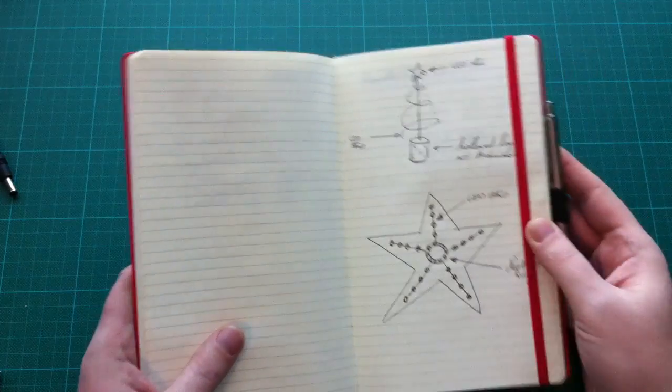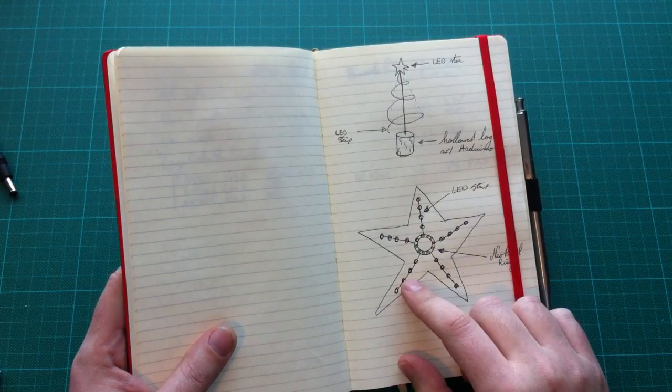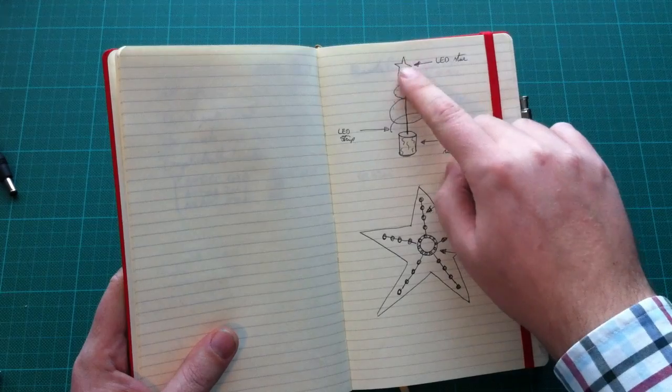This is another video on my Internet of Holiday Lights projects for LEMON14. One of the components I wanted to make was an LED star which would go on top of my digital Christmas tree.